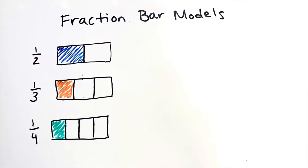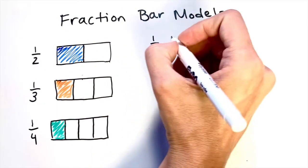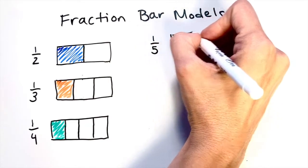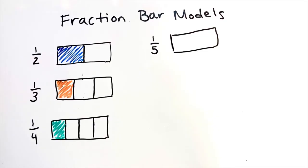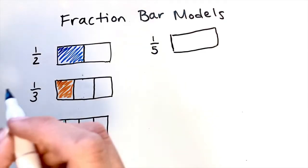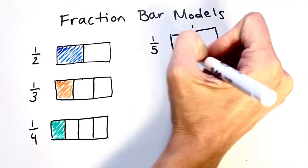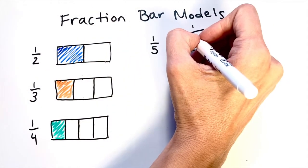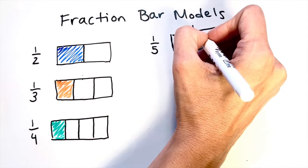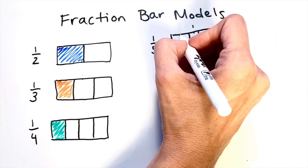Let's take a look at one fifth. Fifths are tricky. I'll start by drawing my rectangle and just like I did with thirds, I'm going to imagine an imaginary line going right down the middle of my rectangle. Then to create fifths, I'm going to draw a line just to the left of my imaginary center line and just to the right. And then I'm going to divide each of the pieces on either end in half.